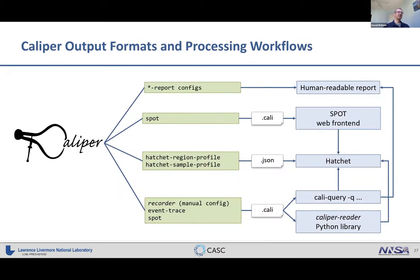There are many ways to process data produced with Caliper: built-in configs that directly produce human-readable data, recording data for Spot, using Hatchet-specific configs to generate data for Hatchet directly, or using custom measurement configurations for the cali-query tool or a recently added Python reader library. This illustrates the wide range of ways you can use Caliper.